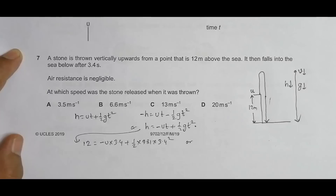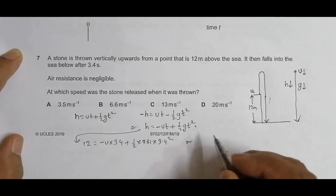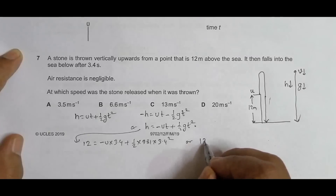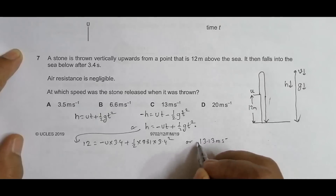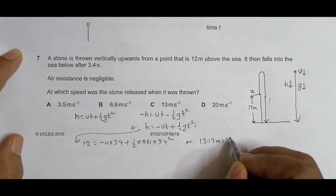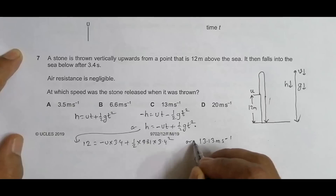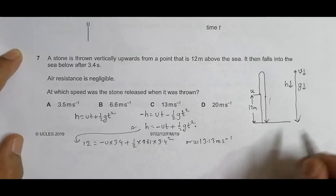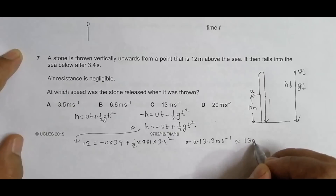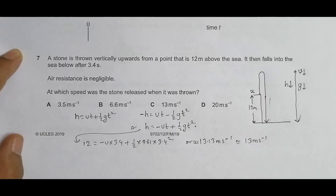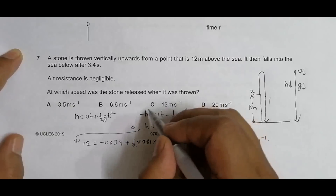Solving this gives u = 13.13 meters per second. Taking the nearest value, u equals 13 meters per second, which corresponds to choice C. So C is the correct answer.